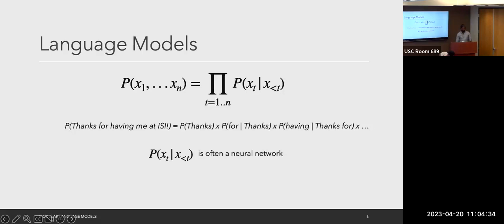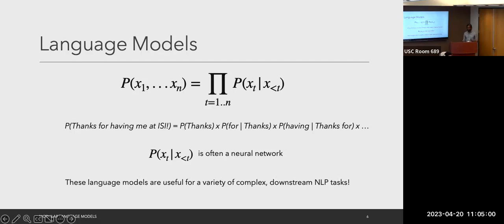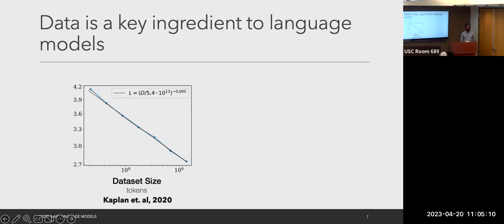Just to ground our discussion, here's the basic language model we're working with: we model a probability distribution over strings and decompose it into the probability of each token conditioned on its history. We estimate this distribution using a neural network. These tools are not just useful for modeling distributions over strings — we can also perform complex downstream NLP tasks like text classification and code generation. Data has been found to be a key ingredient to building good language models.